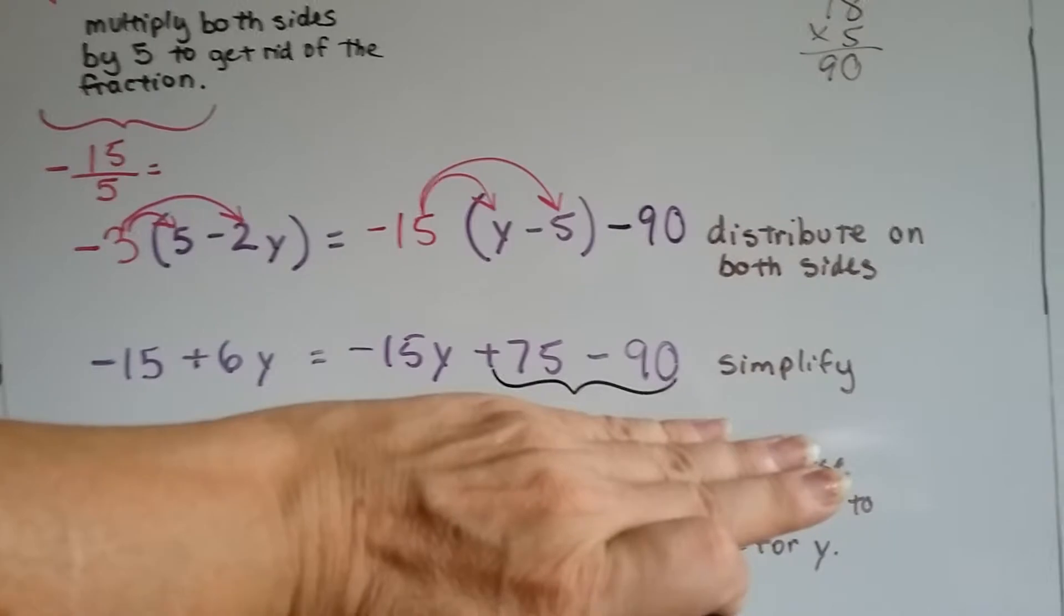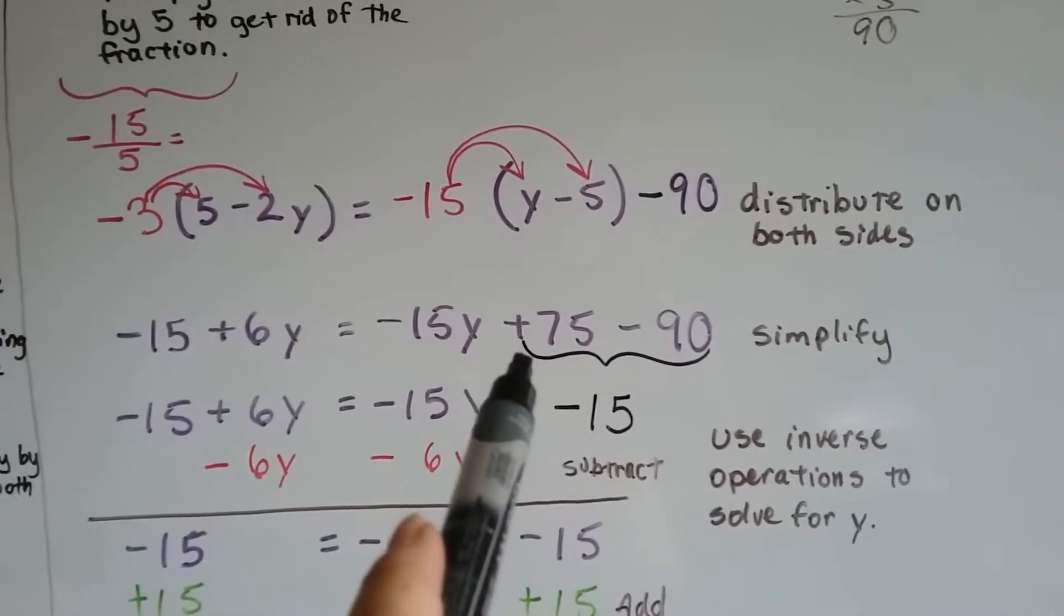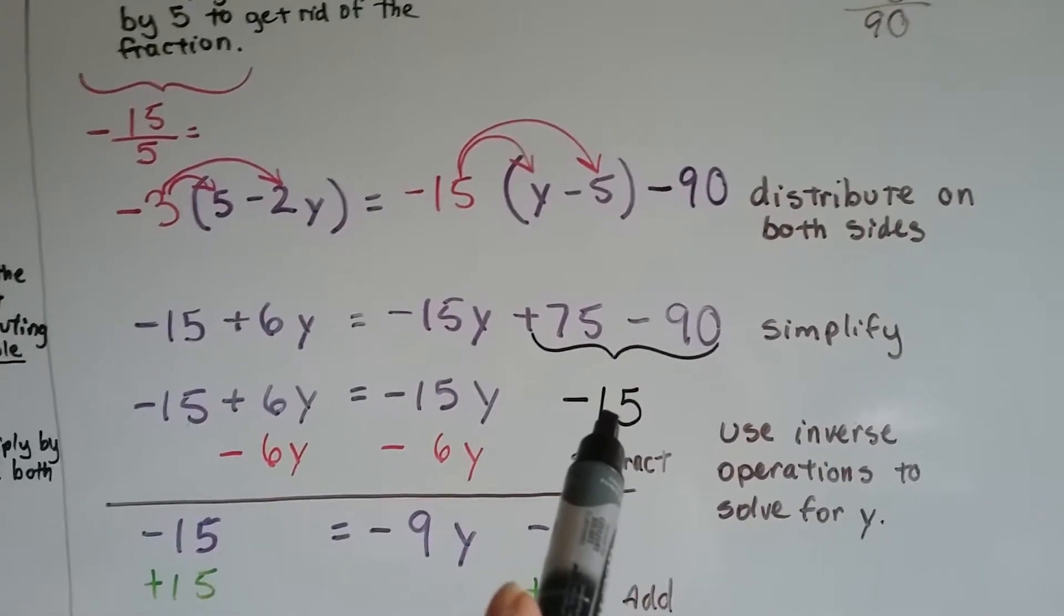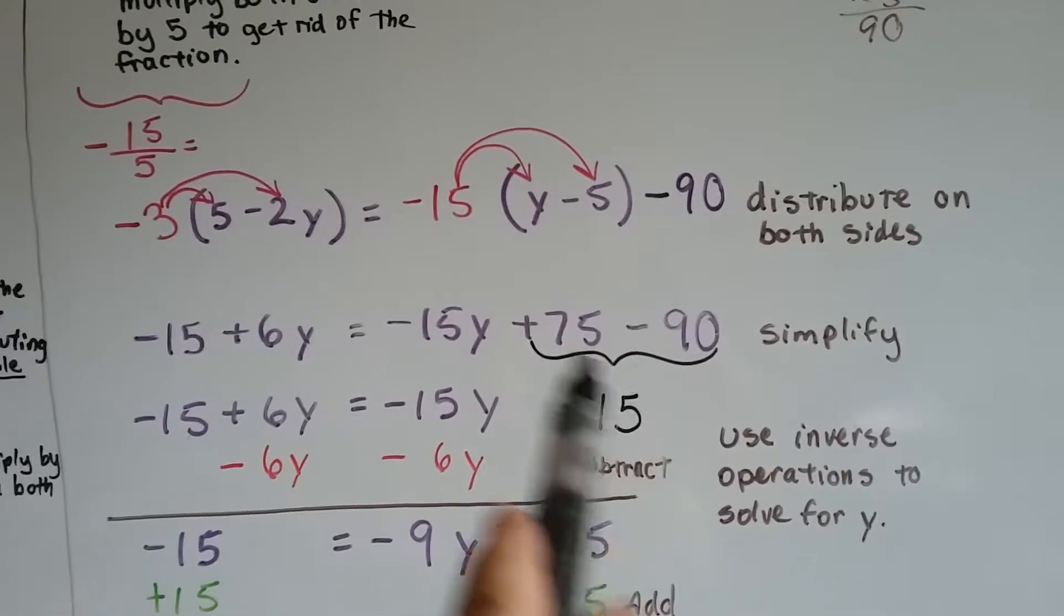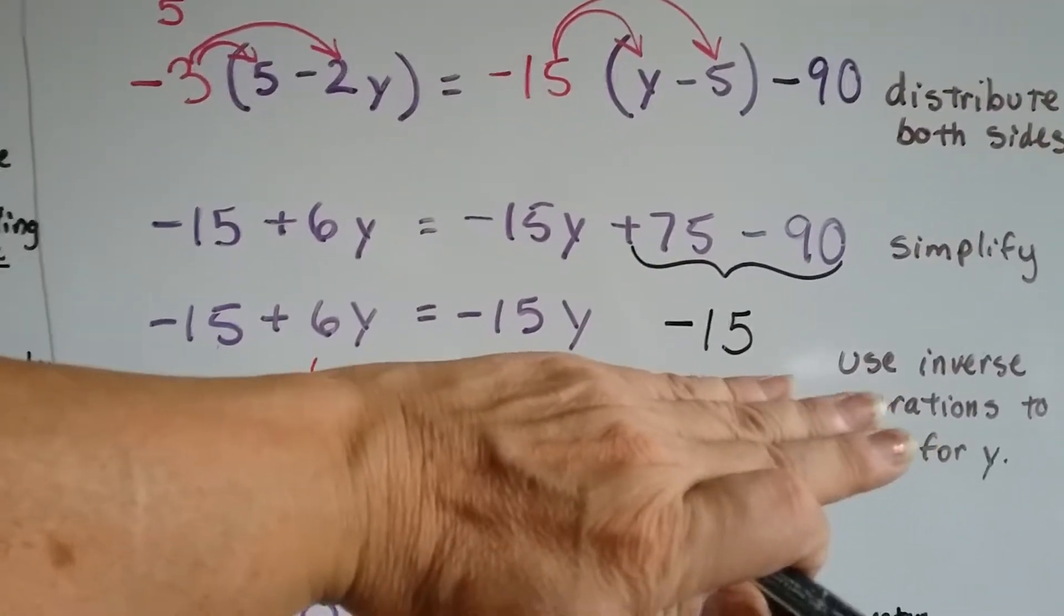Now that's our equation right here, and we simplify. When we put together the positive 75 and the negative 90, we get a negative 15. Now we've eliminated this, and it turned into a negative 15. Now that's our new equation.